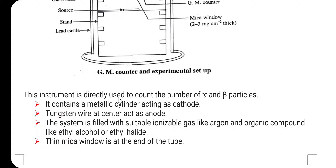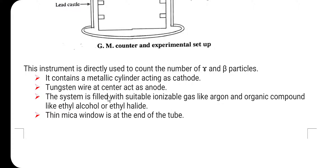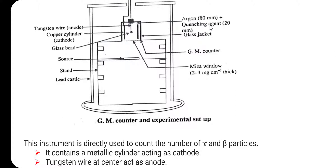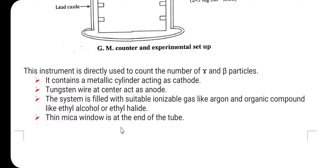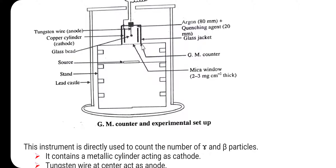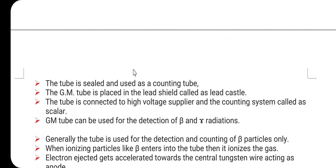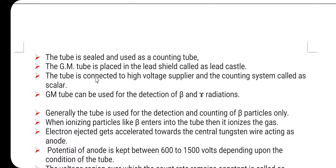The GM counter is directly used to count the number of gamma and beta particles. It contains a metallic cylinder acting as the cathode, with a tungsten wire at the center acting as the anode. The system is filled with a suitable ionizable gas like argon, mixed with an organic quenching agent such as ethyl alcohol or ethyl halide — argon at 80 mmHg and quenching agent at 20 mmHg. The mica window is at the end of the sealed GM tube, which is placed inside a lead castle.